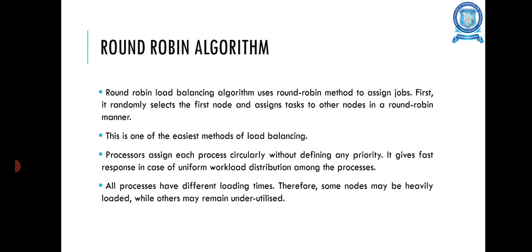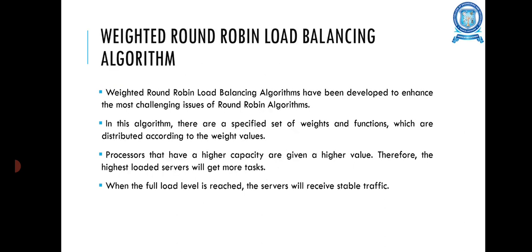The round robin load balancing algorithm uses the round robin method to assign jobs. It randomly selects the first node and assigns tasks to other nodes in a round robin manner, making it one of the easiest methods of load balancing. The processor assigns each process circularly without defining any priority, giving fast response in cases of uniform workload distribution. However, since all processors have different loading times, some nodes may be heavily loaded while others remain underutilized.